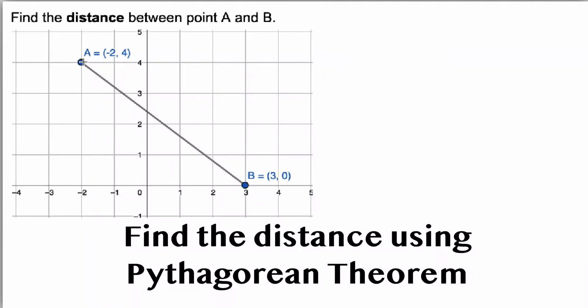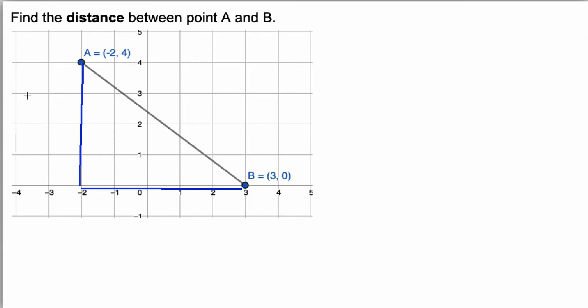I'm going to show you how to find the length of AB using the Pythagorean Theorem. If I'm going to use Pythagorean Theorem, I'm going to draw a right triangle.